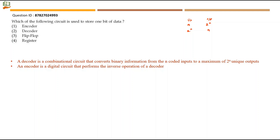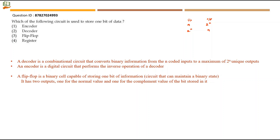A flip-flop is a binary cell capable of storing one bit of information — either a 0 or a 1. It is a circuit that can maintain a binary state. It has two outputs: one for the normal value and one for the complement. If the stored value is 1, the complement 0 is also given as output; if the stored value is 0, the complement 1 is given.